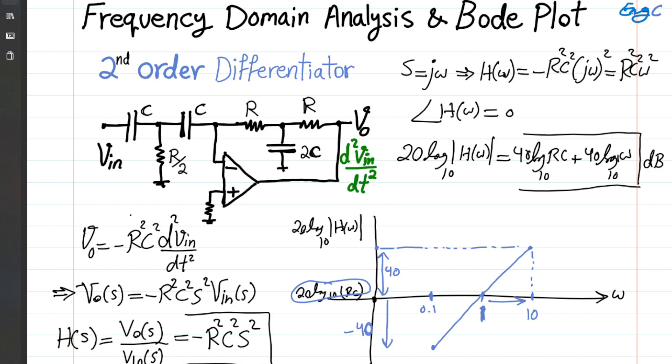And this is negative 40 starting from the base value of 20 log 10. Sorry, this is 40 log 10 RC. So this needs a correction here. My bad. This is 40 log 10 RC, as the formula here is showing.